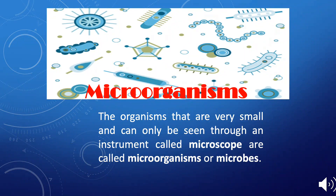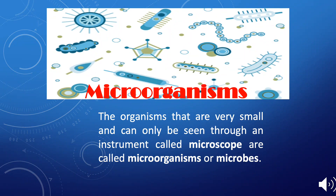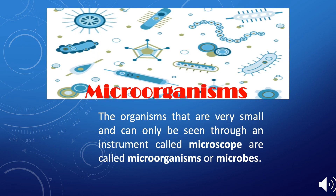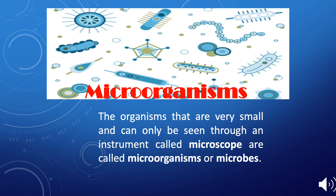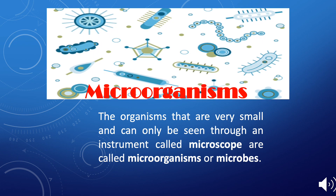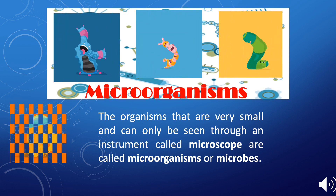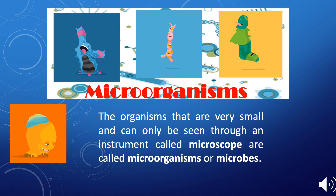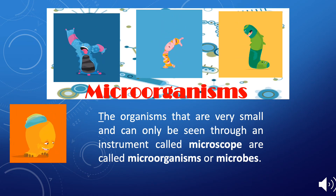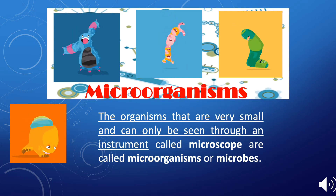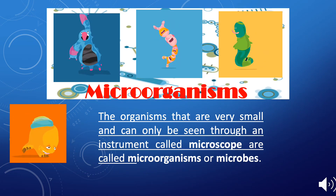A warm welcome to all my students. Today's topic is micro-organisms. As you know, there are different kinds of organisms living in the environment around us. Some of these organisms are large and some are small. There are also some organisms which are so small that they cannot be seen with the naked eye. These organisms are known as micro-organisms or microbes — organisms which are very small and can be seen only with the help of a microscope.